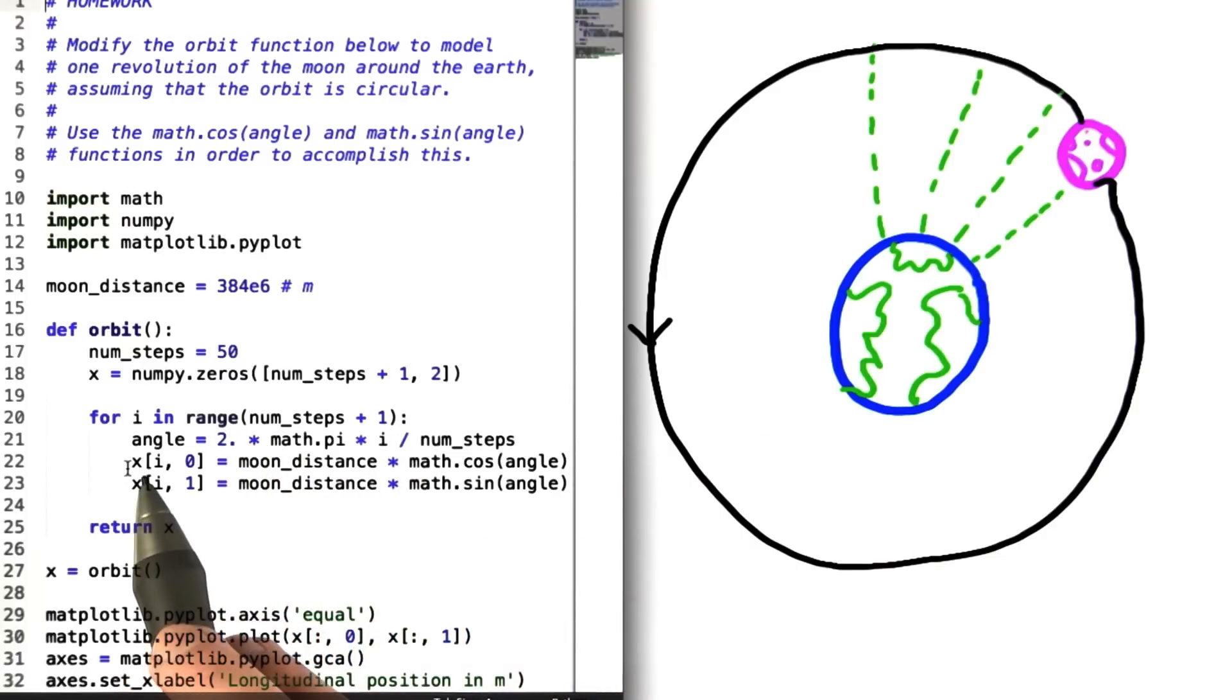Inside the loop, we've created a variable called angle, which is equal to 2 pi times the index divided by the number of steps that are taken in the trajectory.